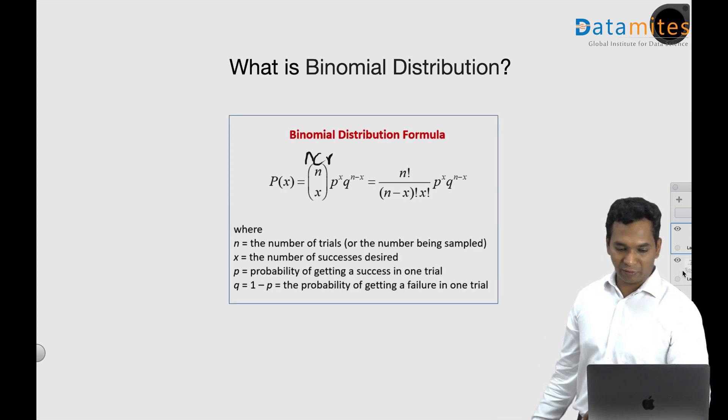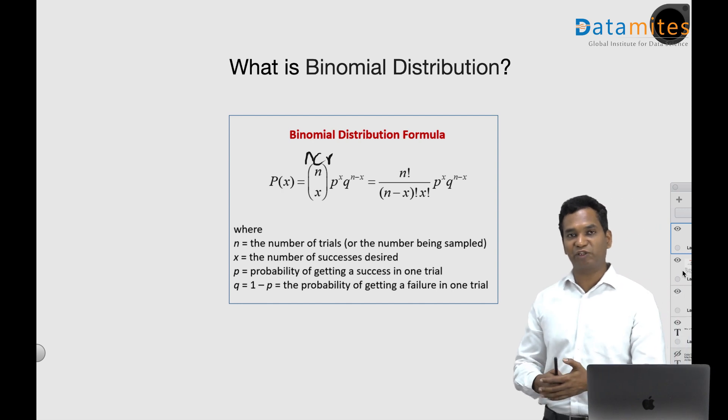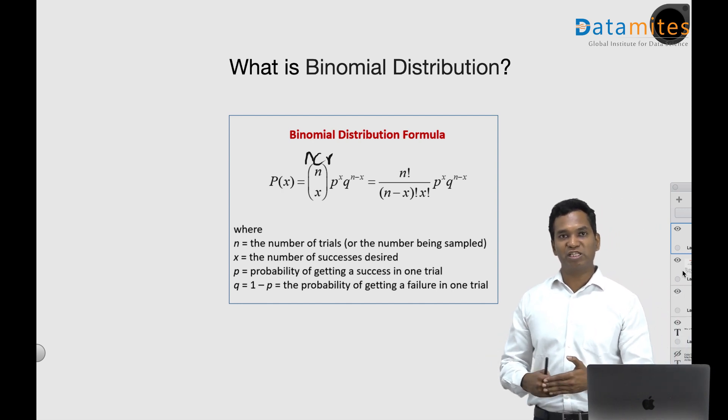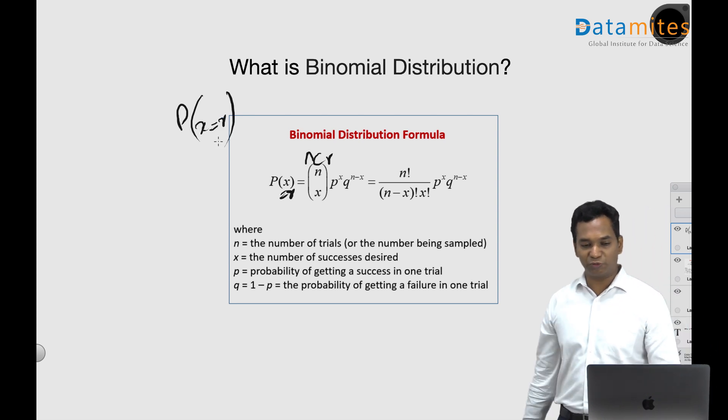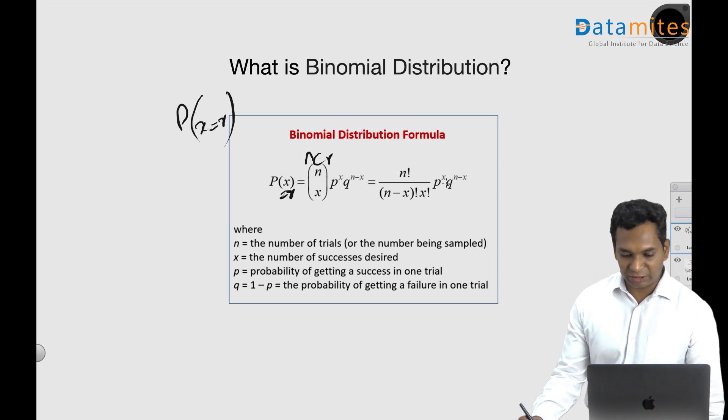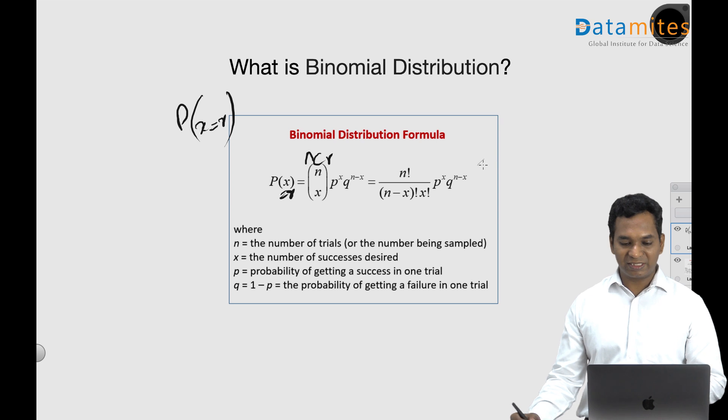If you look at the formula for it, it is nCr—which is n factorial divided by r factorial times n minus r factorial—then you have p to the power of r, and q, which is the probability of failure, to the power of n minus r or n minus x. This is the formula for calculating the probability of a binomial distribution.